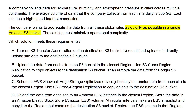The next thing highlighted in yellow is 'as quickly as possible in a single Amazon S3 bucket.' This tells us the goal of the question, which is the most important thing to understand. We now know the question wants us to find a solution that can aggregate data from all the global sites into a single Amazon S3 bucket as fast as possible. The final keyword highlighted is 'minimize operational complexity.' This is a secondary goal — if we have multiple correct answers, we can use this to narrow our choices. It means the answer we choose should not be very complex to operate.